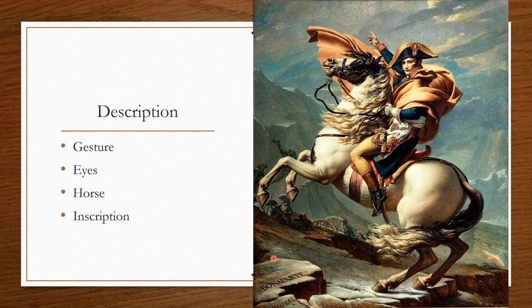The next element is the inscriptions. On the bottom of the painting you will see his last name, Bonaparte, inscribed in the stone. Below it — cut off in the original painting — is the name Hannibal, a famous military commander, as well as Charles the Great. All three of these figures crossed the Alps in their lifetime, and so this is a sort of passing of the torch to Napoleon.